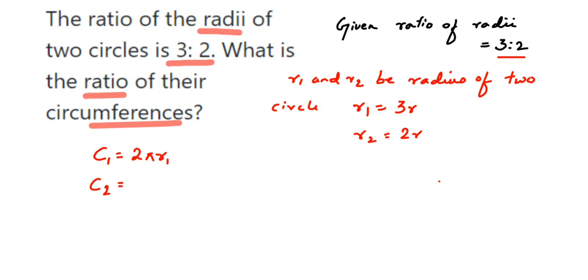Now since they are asking us to find out the ratio, that means we have to find out c1 upon c2, because ratios can also be written in division form like c1 upon c2.